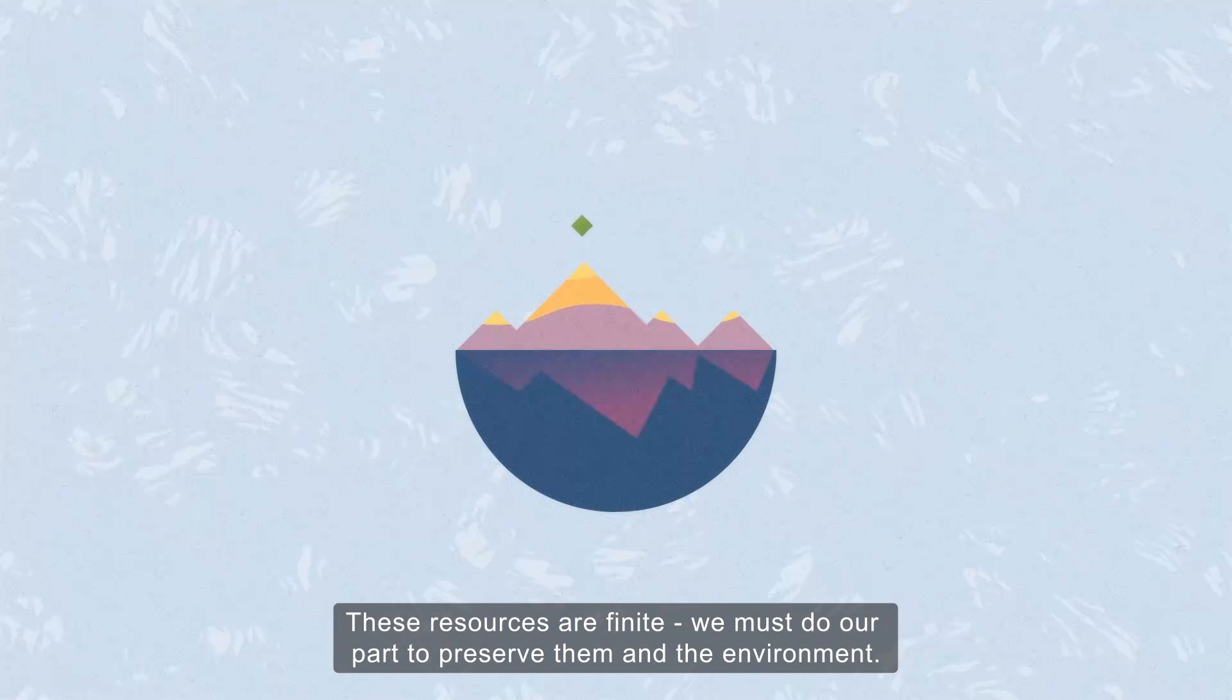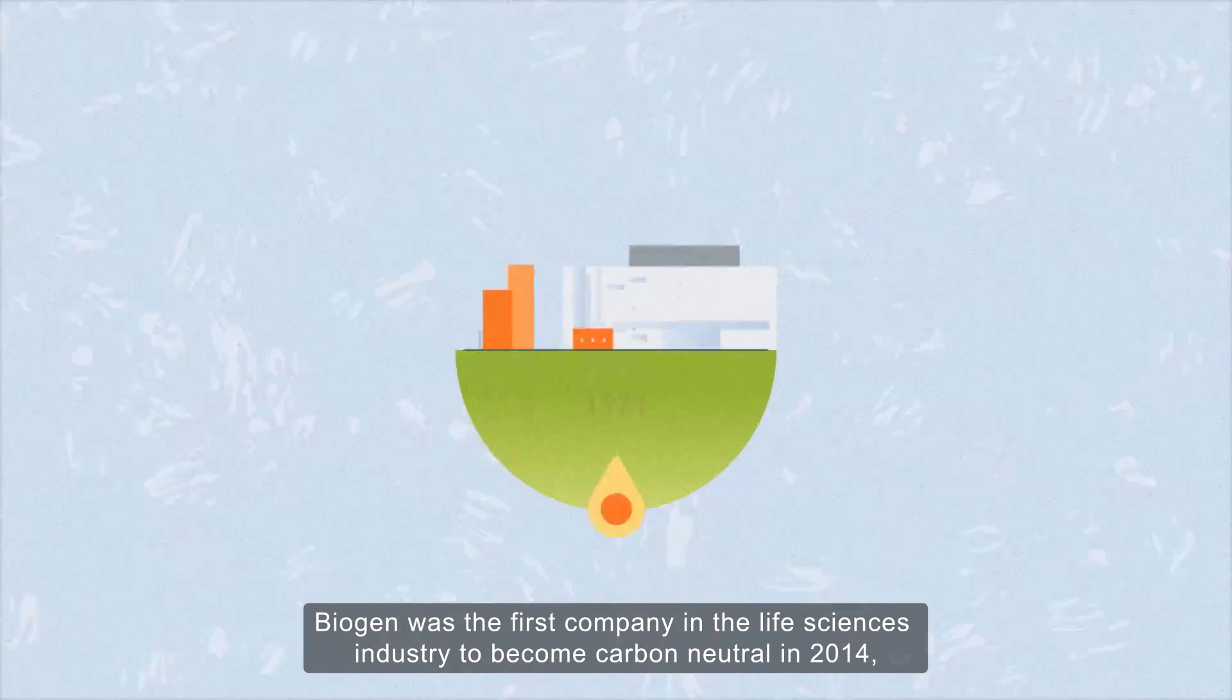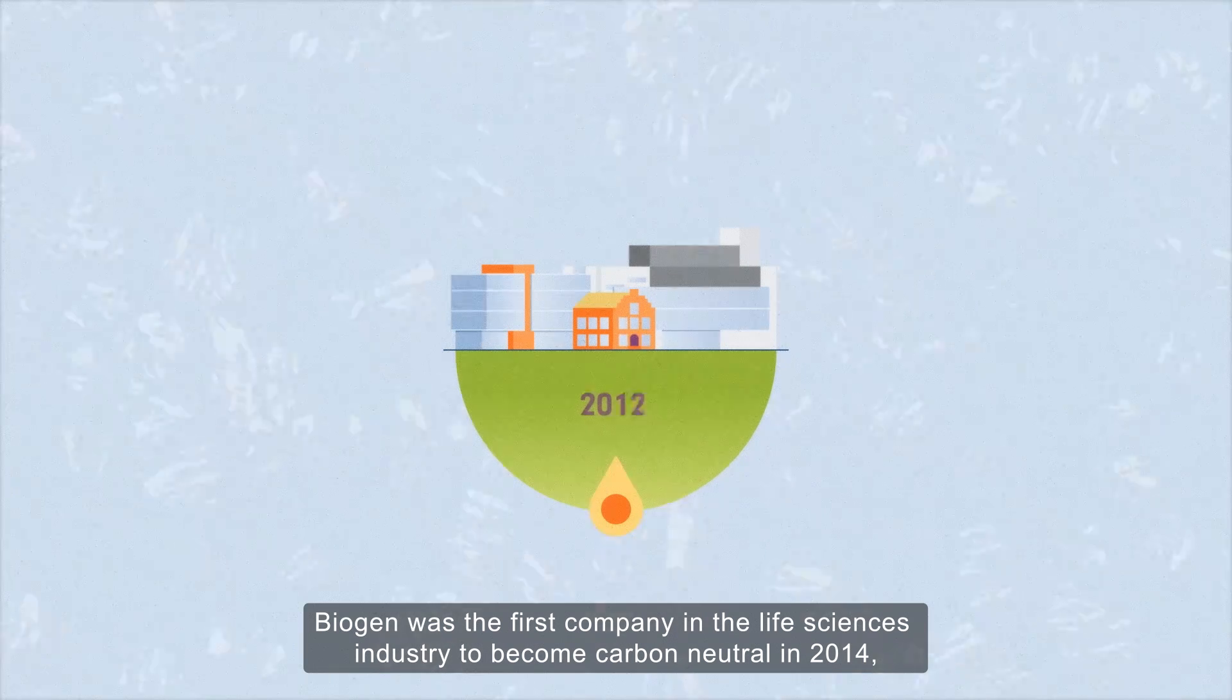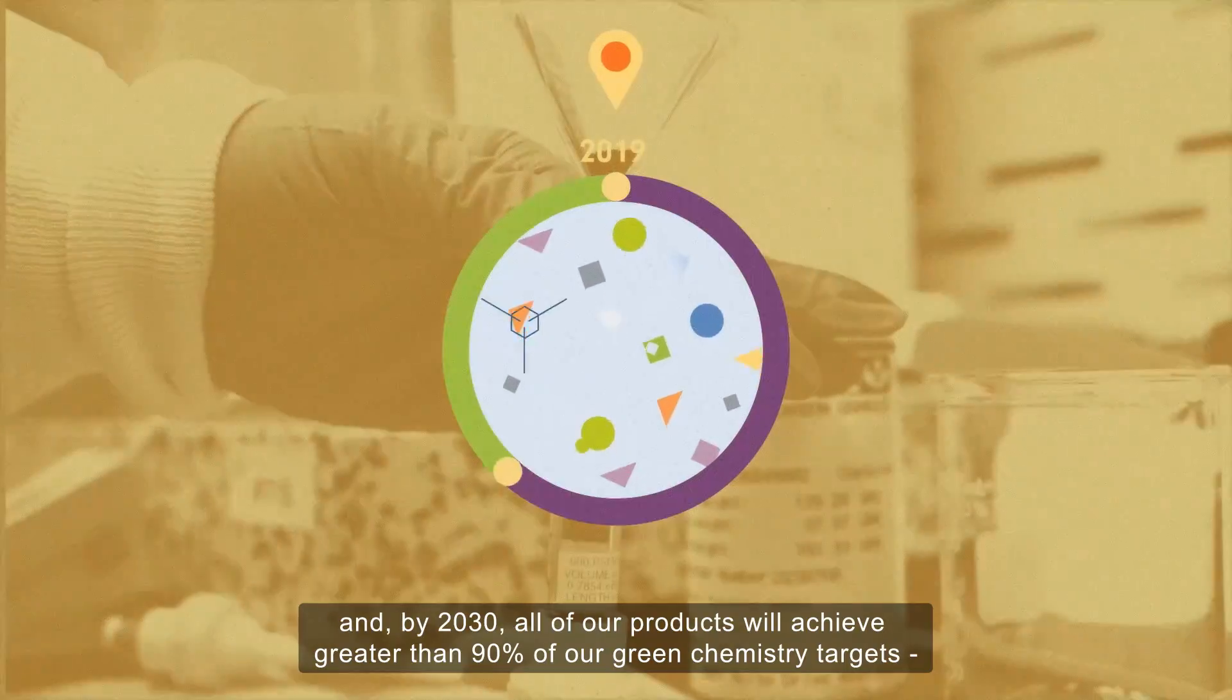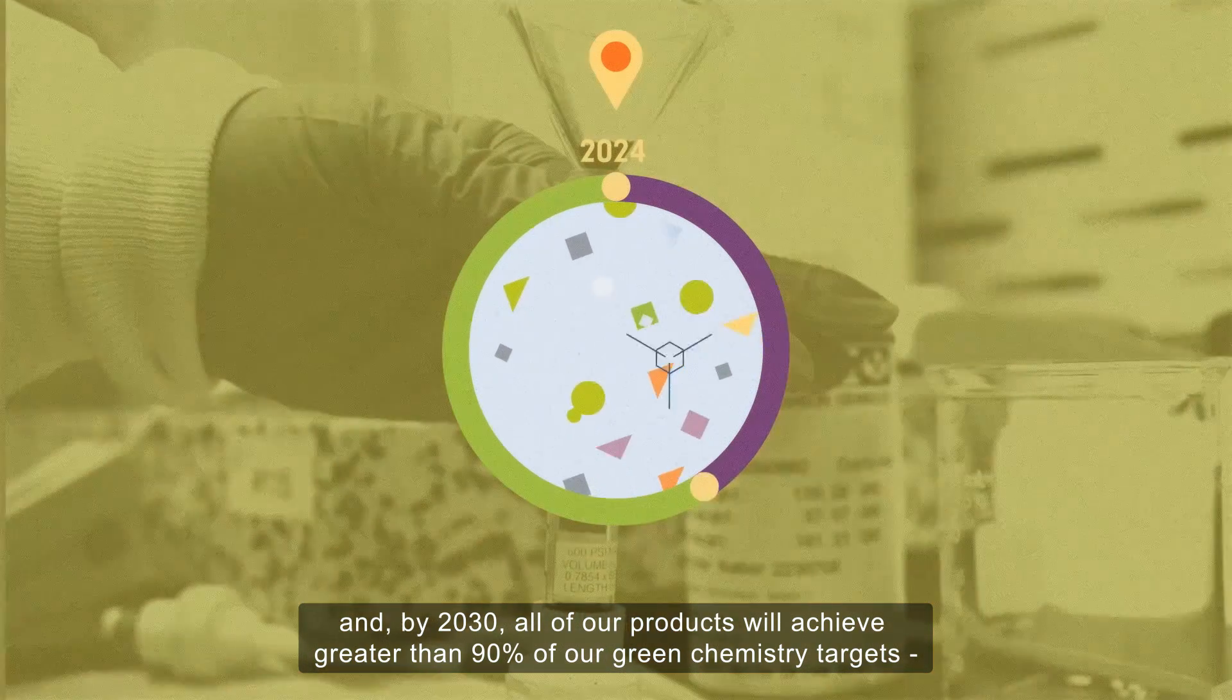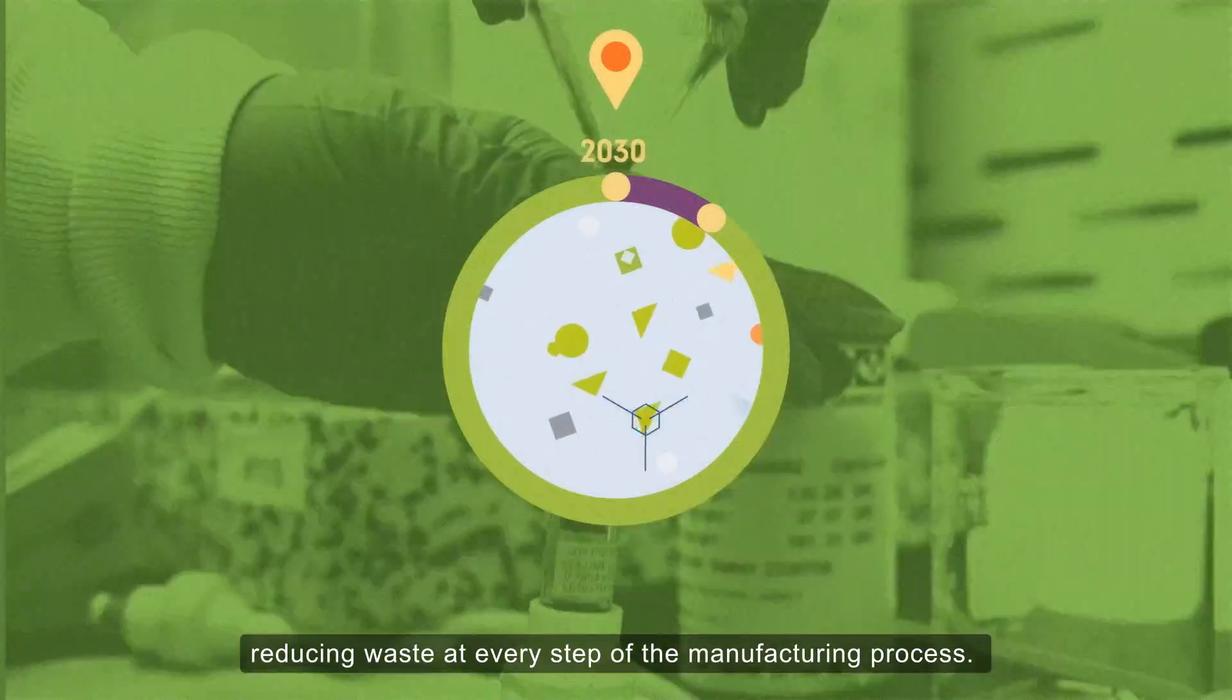These resources are finite. We must do our part to preserve them and the environment. Biogen was the first company in the life sciences industry to become carbon neutral in 2014, and by 2030, all of our products will achieve greater than 90% of our green chemistry targets, reducing waste at every step of the manufacturing process.